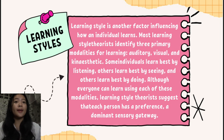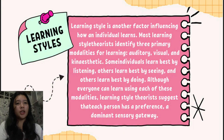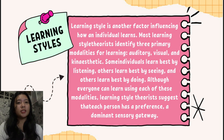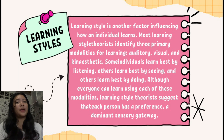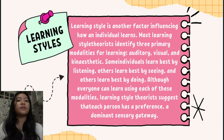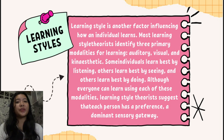Let's define what a learning style is. A learning style is another factor influencing how an individual learns. Most learning style theories identify three primary modalities for learning: auditory, visual, and kinesthetic. Some individuals learn best by listening, others by seeing, and others by doing. Although everyone can learn using each of these modalities, learning style theories suggest that each person has a preference — a dominant sensory gateway.